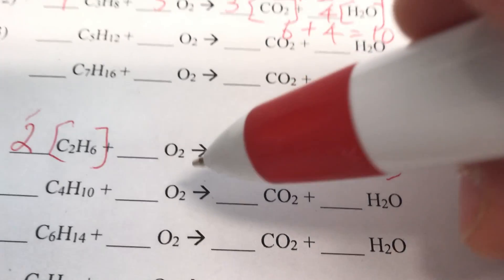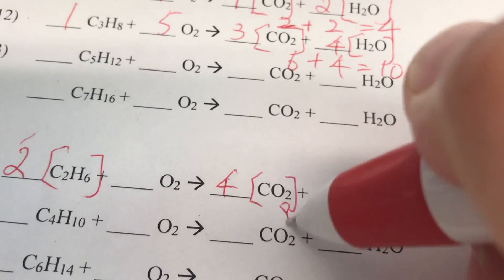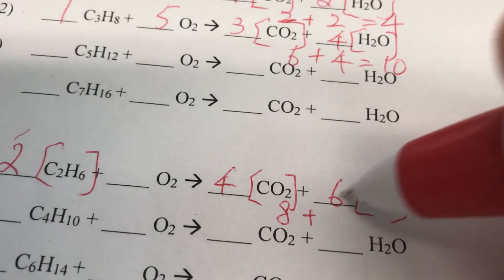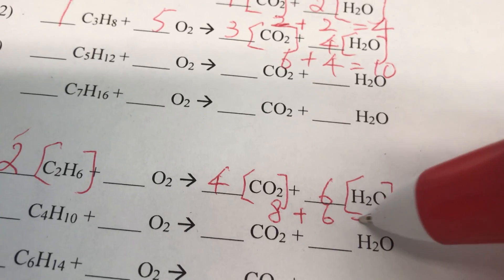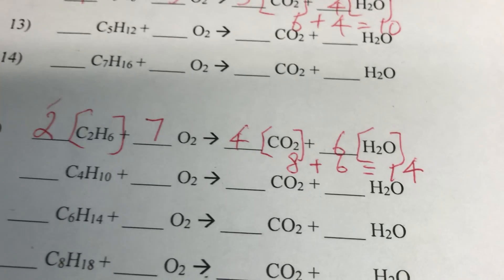Next is oxygen. This is always 2. Now oxygen here, 4 times 2 is 8 plus 6 times 1 is 6. 8 plus 6 is 14. 14 divided by 2 is 7. So this is balanced.